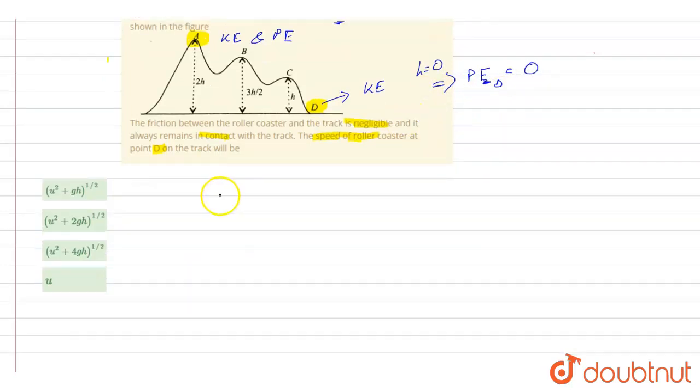So from the law of conservation of energy, I can write total energy at initial point will be equal to total energy at the final point of a system. Therefore, kinetic energy at point A plus potential energy at point A will be equal to kinetic energy at point D plus potential energy at D, that is 0.